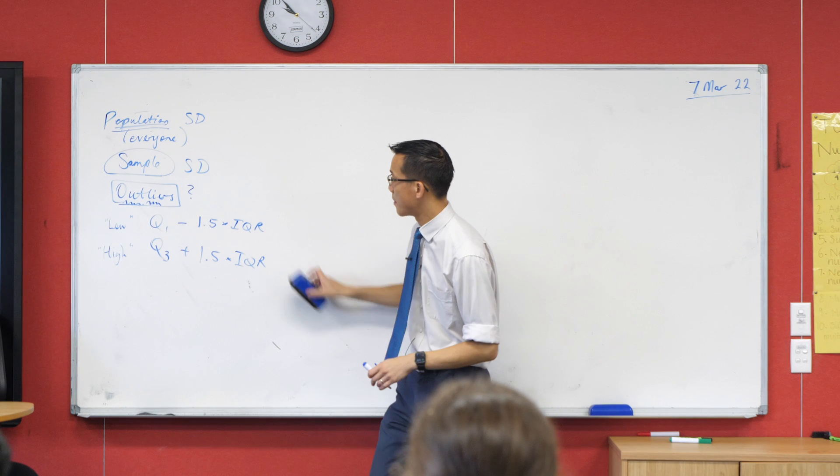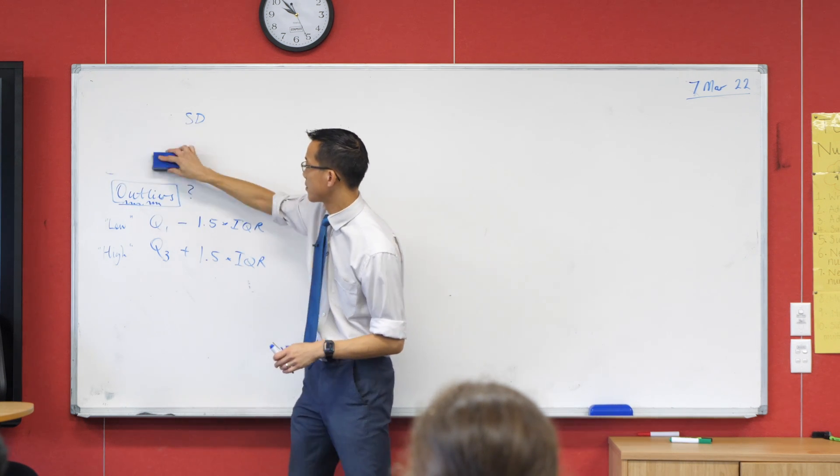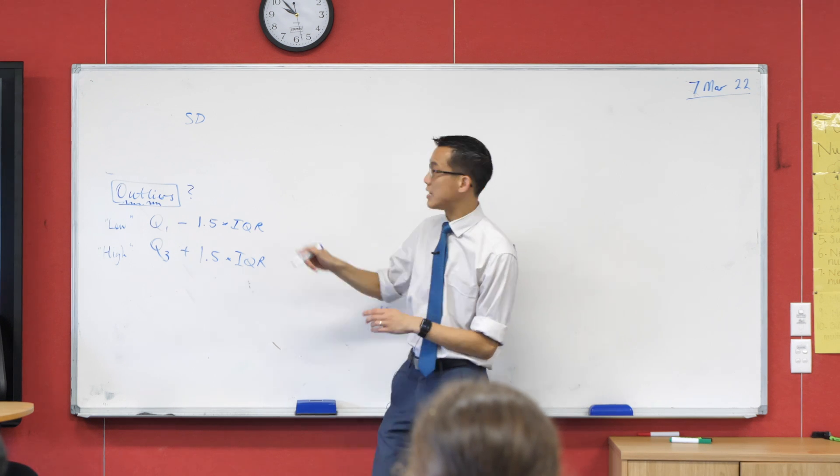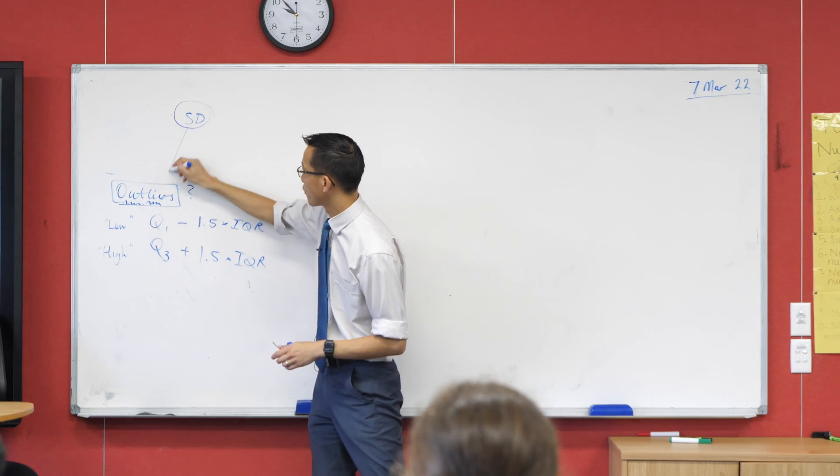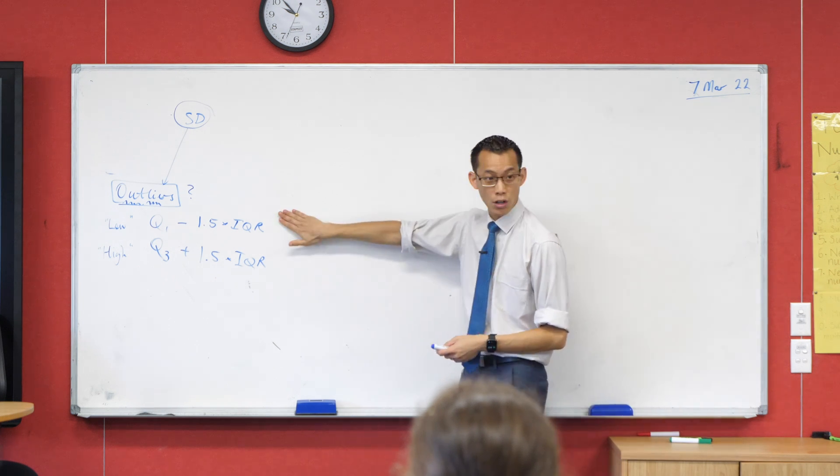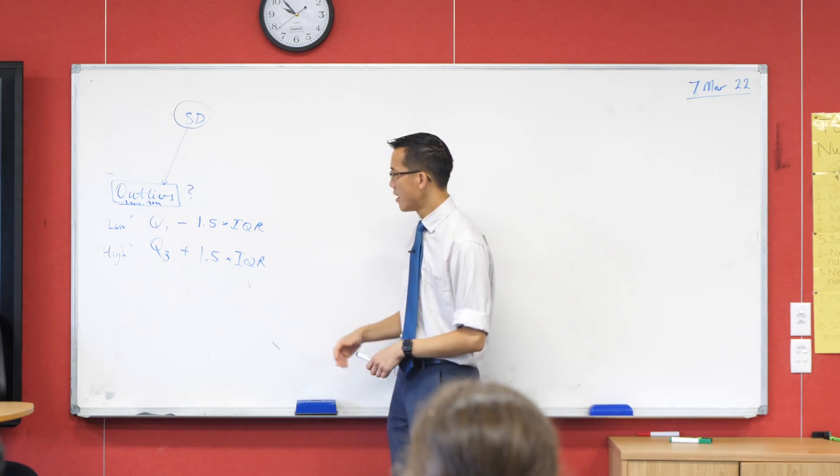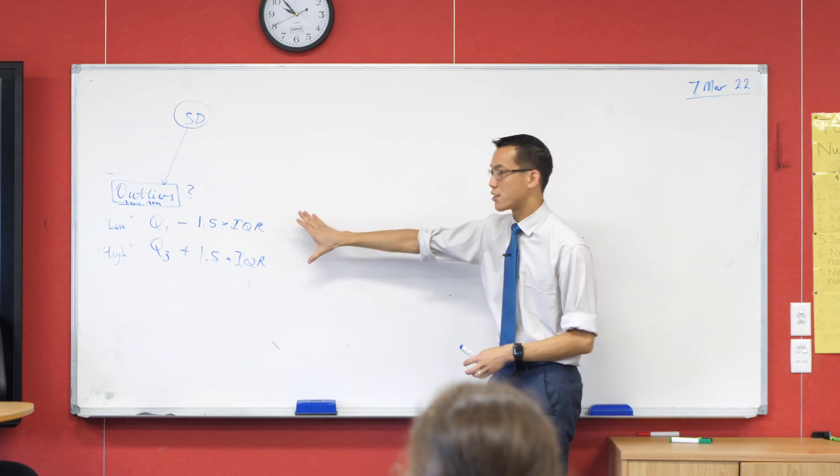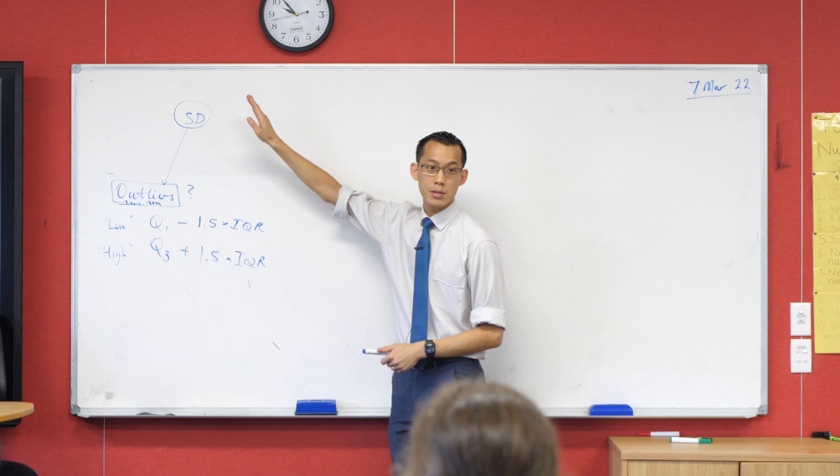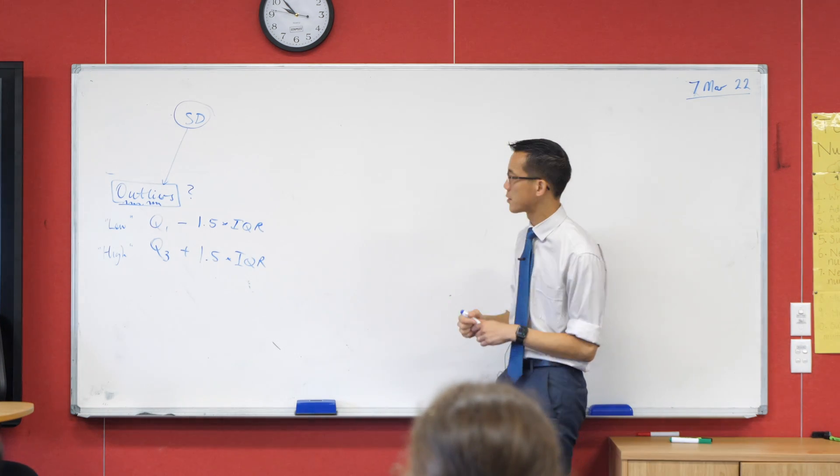But we can actually use, let's not worry about this for now, we can actually just talk about this as one big concept. We can actually use the standard deviation to help us to find what an outlier is, but it works in much the same way as going low and going high. So you've probably got this written like in last week's work, but can you write it for me again.